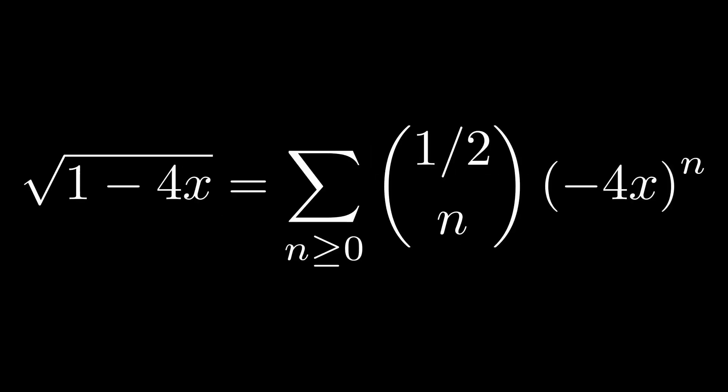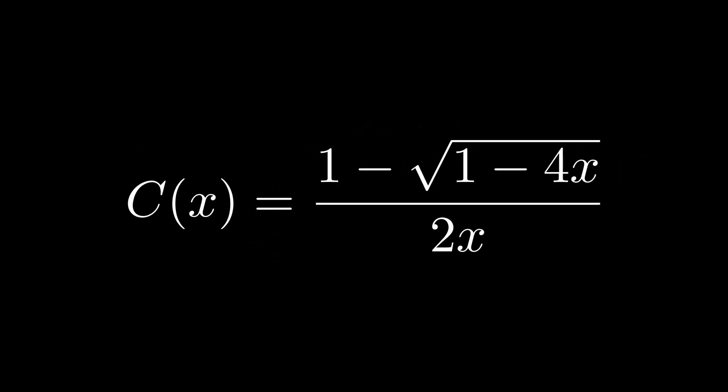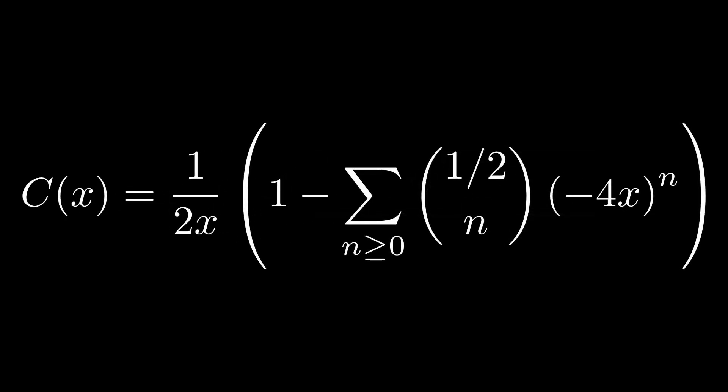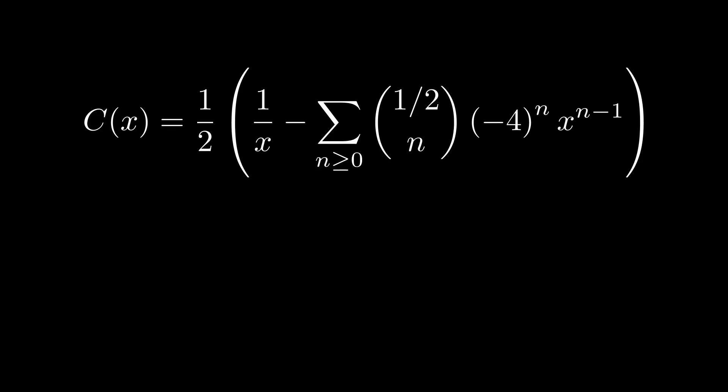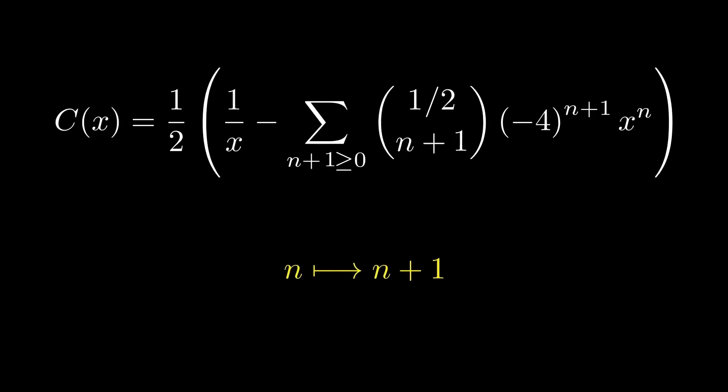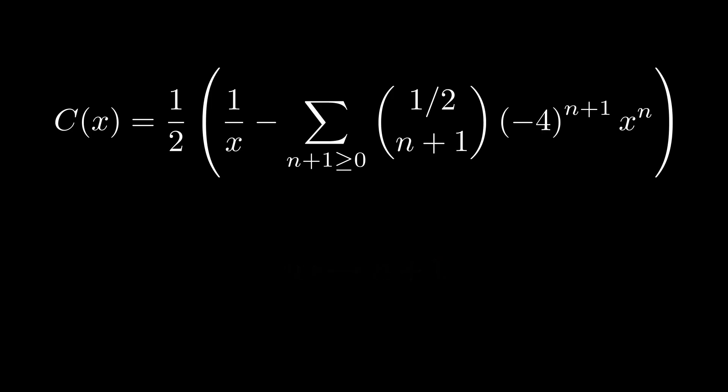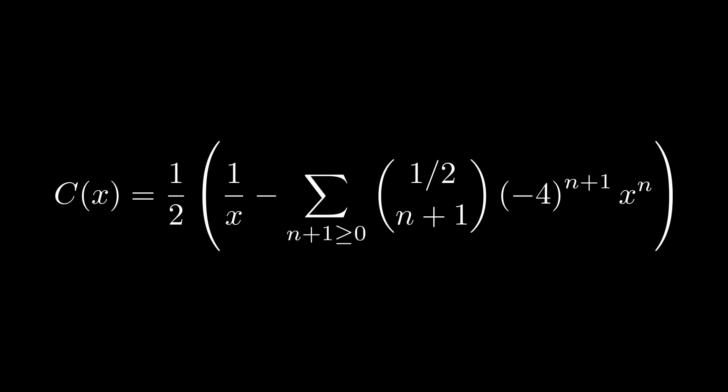Equipped with this, we can now demonstrate the explicit formula for the Catalan numbers. We'll do this by re-expressing the coefficients of the generating function. Recall again that from the generalized binomial theorem, we can re-express the square root of 1 minus 4x as follows. Now, plugging this in the formula of the generating function gives us the following.